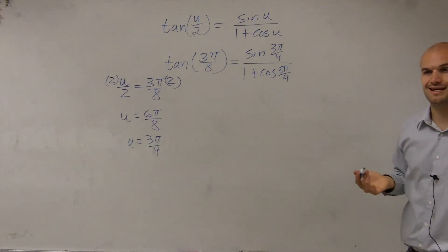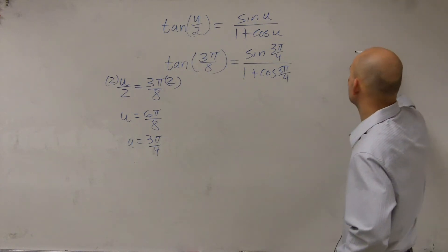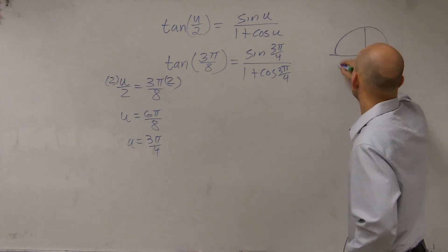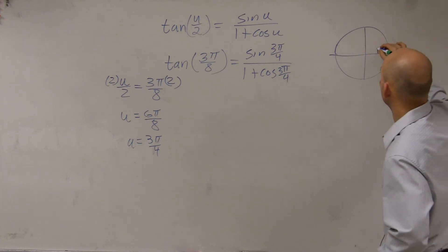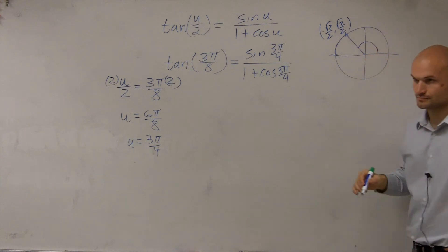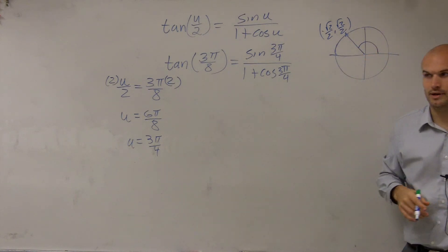So now we need to figure out the sine of 3 pi over 4. We go back to our unit circle. We say 3 pi over 4, right there, that's negative square root of 2 over 2, comma, square root of 2 over 2.